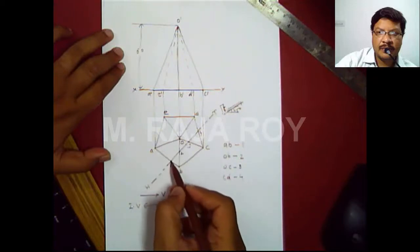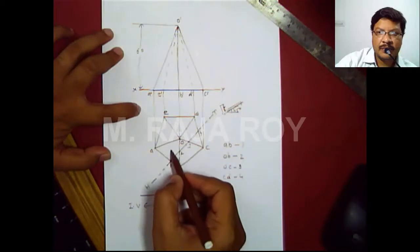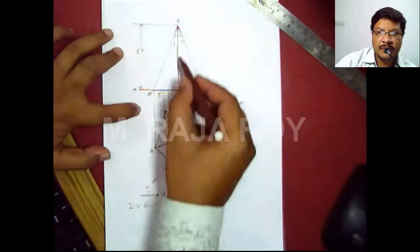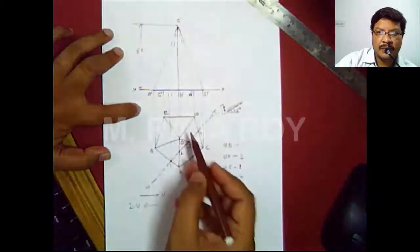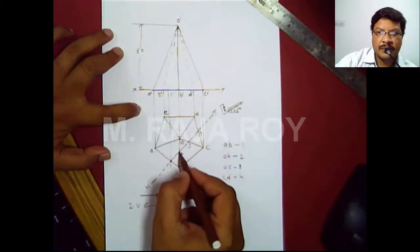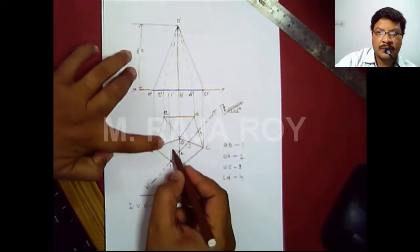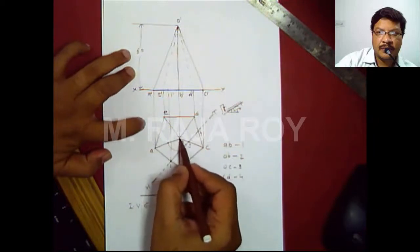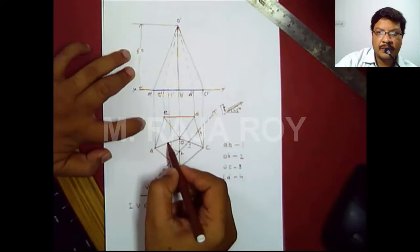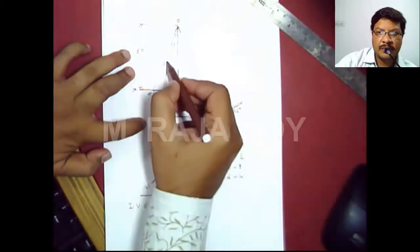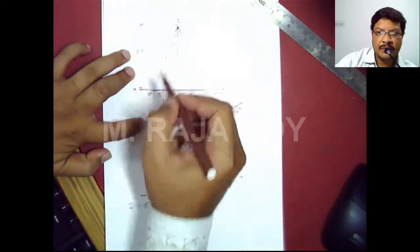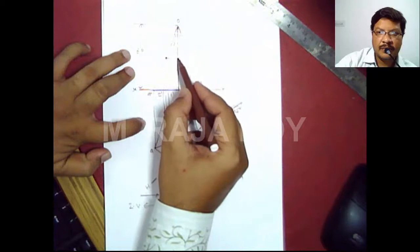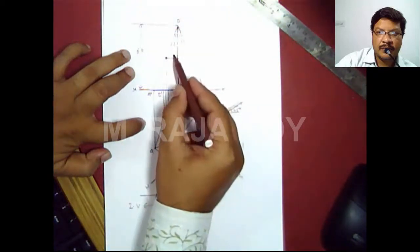Transfer point 1 to the front view by drawing a projector — somewhere here I will get 1'. For point 2, when drawing the projector it overlaps with the slant edge, so transfer it to the adjacent slant edge OA. Draw a projector onto O'A' to get that point, then shift this point onto the correct slant edge O'B' to get 2'.